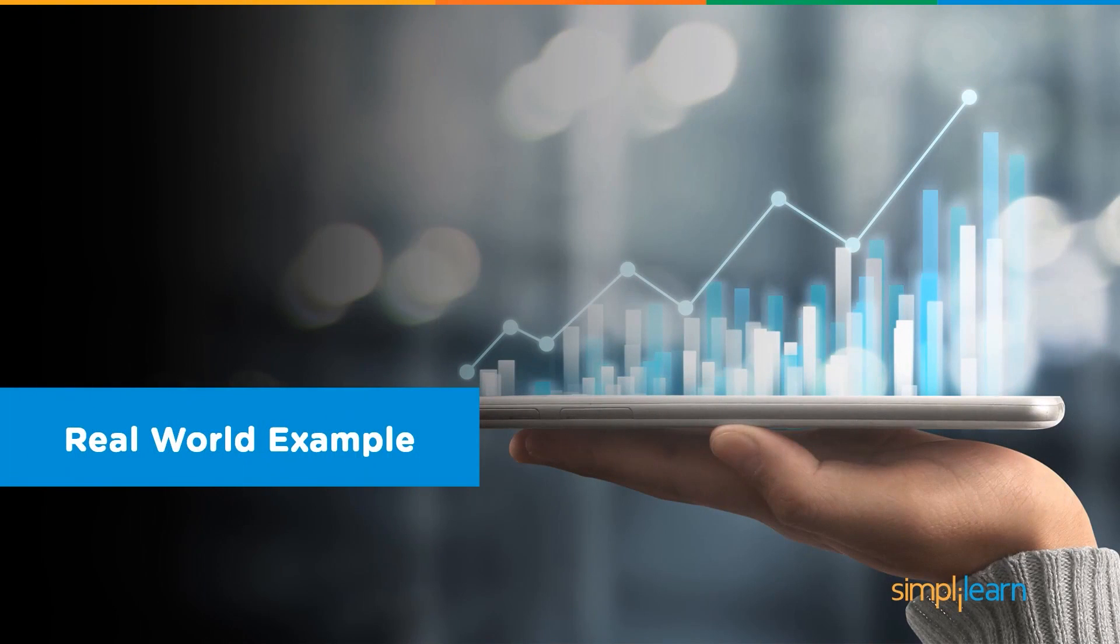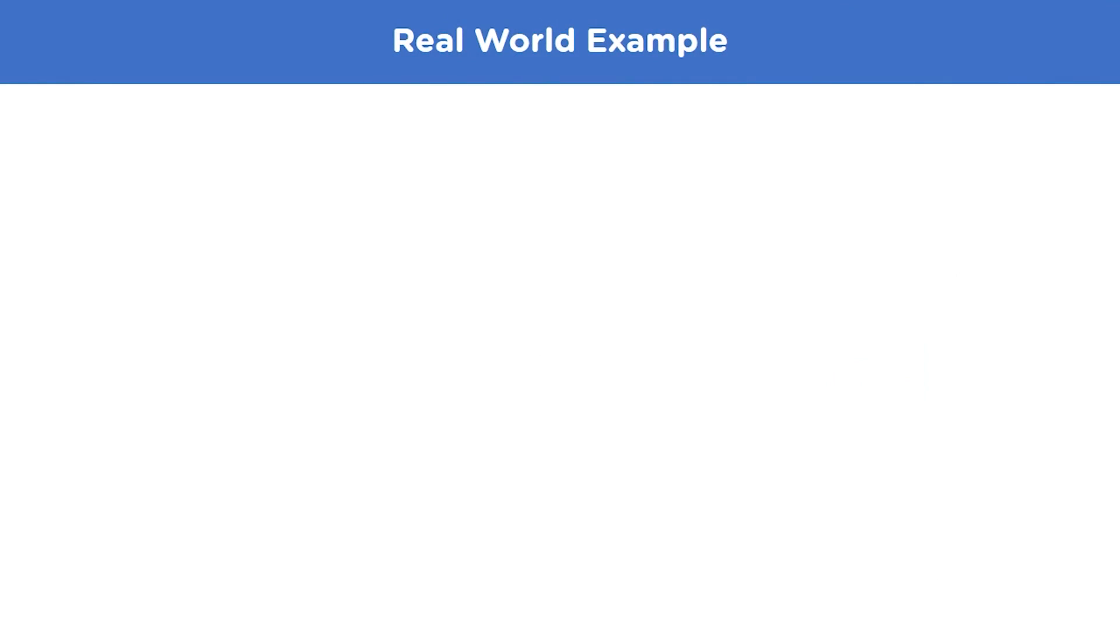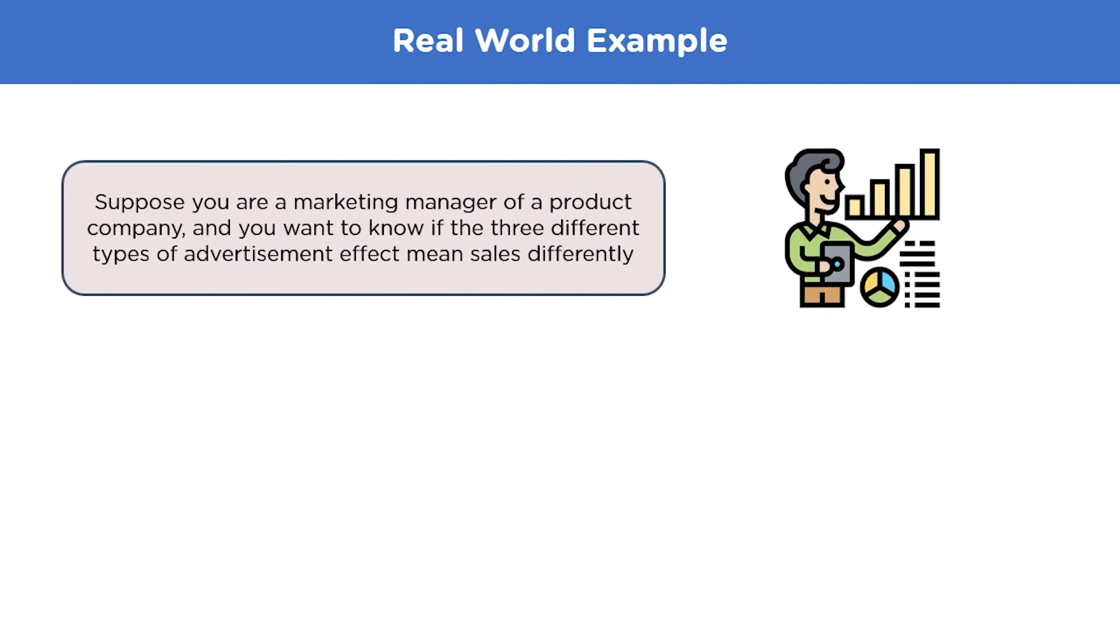Now that we have covered almost all the theory regarding the ANOVA, let's try to understand how this is used in a real world example. Suppose you are a marketing manager of a product company. Your team has recently launched three new advertisements and you want to know if the three different types of advertisements affect mean sales differently. So, how can you do that?